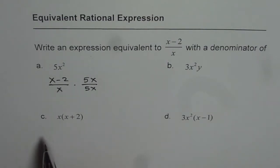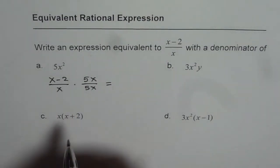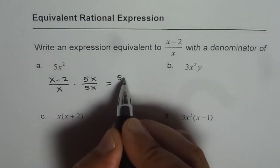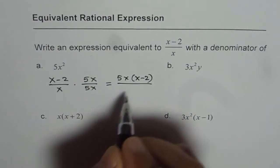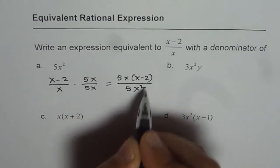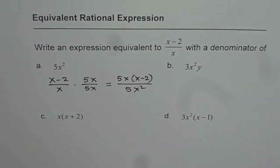And therefore the expression is equivalent to the given expression. So if we do that, what do we get? We get in the numerator 5x times x minus 2, and in the denominator we get 5x squared. That is what was needed.